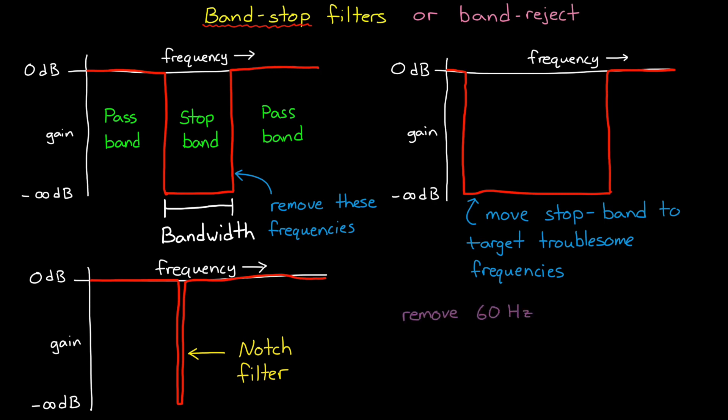For example, you can use a notch to filter out the 60 hertz noise that comes from an AC power source and can show up as an audible hum in audio equipment.